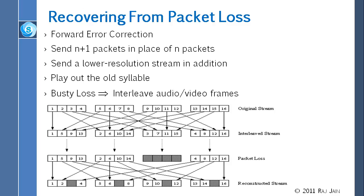Sometimes when you see video on screen, you see blocks — that is because some packets were lost. If they played a zero (silence or black), you would disconnect. Noise is better than zero. The same person's voice replayed is better than noise — it is called error concealment: hiding the error from the user. This is analogous to being put on hold: they play noise or music so you know the line is alive. We saw interleaving, playing out the old syllable (concealment), and low-resolution stream fallback.